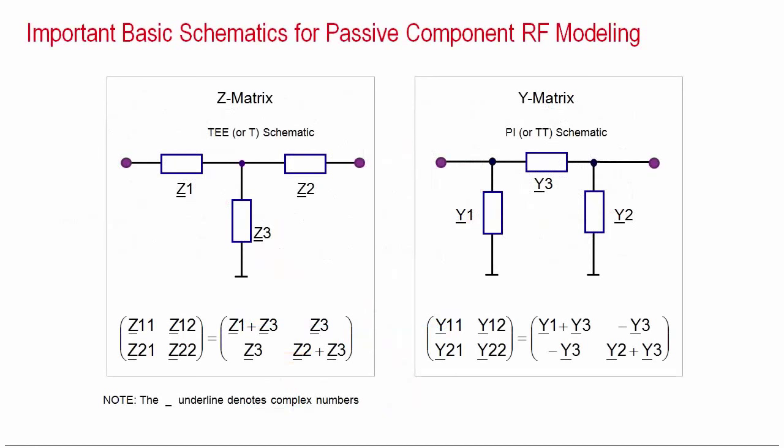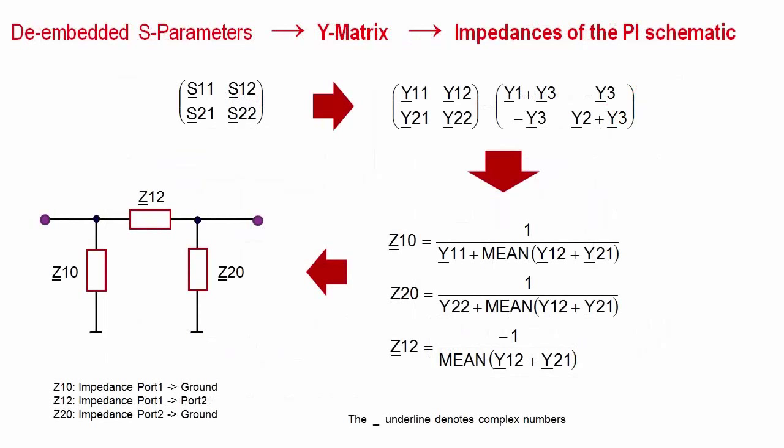For the further detailed development of the SPICE netlist, S-parameters however are too coarse. Therefore, a more sensitive method for modeling is rather to apply Y or Z parameters. For completeness, I am showing here both cases. The T-schematic and its relation to Z parameters, as well as the Pi-schematic and its correspondence to Y parameters. For our capacitor example, we identified already a Pi-schematic and therefore let's stay with the Y parameters.